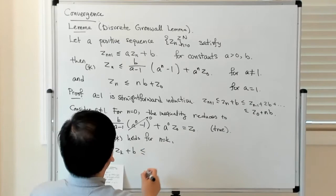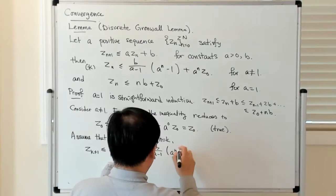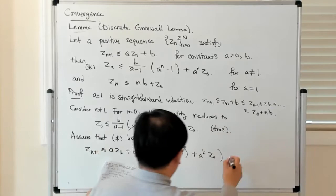That is less than or equal to B/(A-1) times (A^k - 1) plus A^k Z_0. That's the Z_k term, and then you multiply it by A plus B.